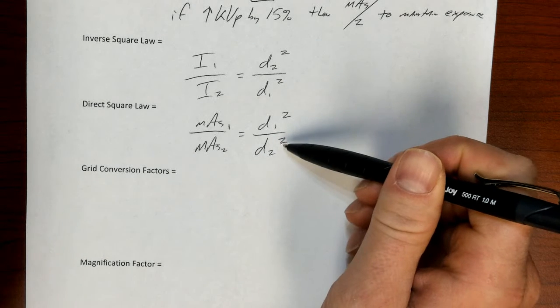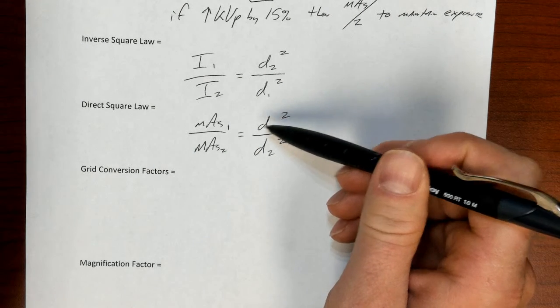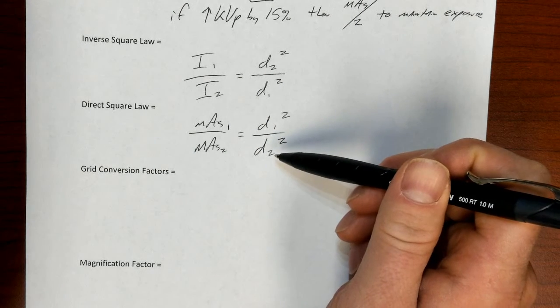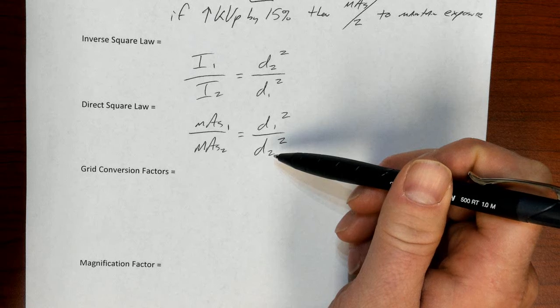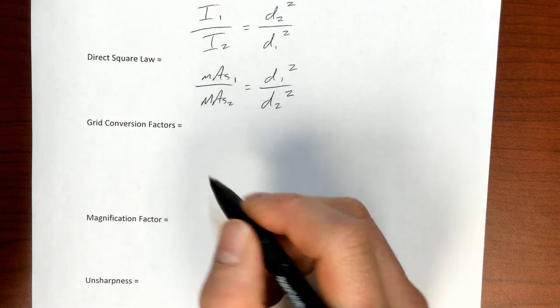So because of this change in intensity up here, where it's inverse, we need to increase or decrease mAs. So if the distance decreases, we would expect mAs to decrease. If the distance increases, we would need to increase the mAs. And again, it will be an exponential change.